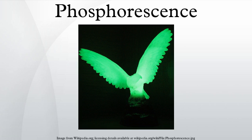Some examples of glow-in-the-dark materials do not glow by phosphorescence. For example, glow sticks glow due to a chemiluminescent process which is commonly mistaken for phosphorescence. In chemiluminescence, an excited state is created via a chemical reaction, and the light emission tracks the kinetic progress of the underlying chemical reaction. The excited state will then transfer to a dimolecule, also known as a sensitizer or fluorophore, and subsequently fluoresce back to the ground state.